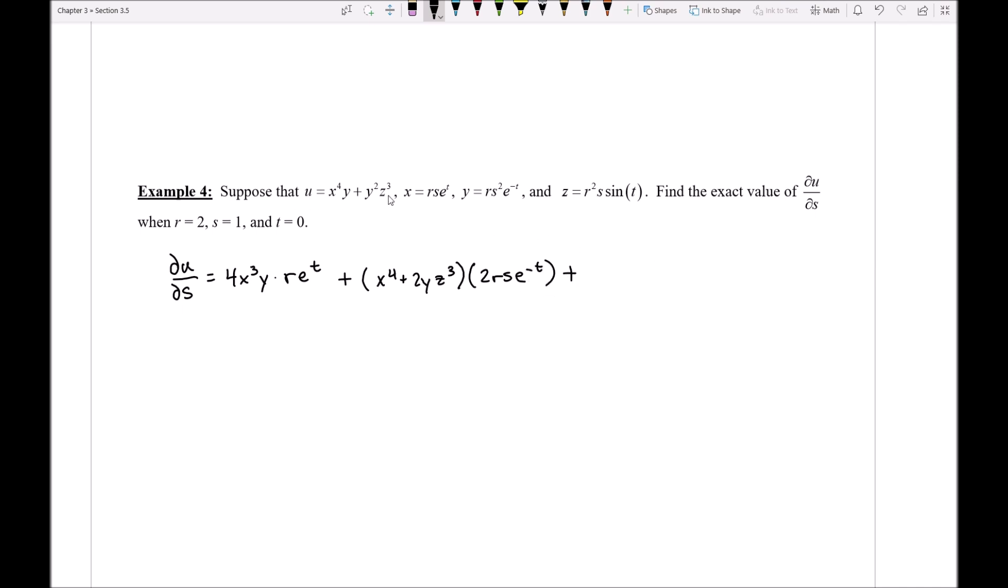Finally, I'm going to do a derivative here with respect to Z. That's going to get me 3Y²Z², and then my partial derivative of Z with respect to S is going to be R² times the sine of T.